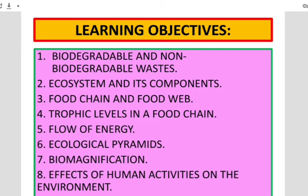In this chapter we are going to read about biodegradable and non-biodegradable waste. But before that we will come to know about what is our environment, then the ecosystem and its components, then food chain and food web, then trophic levels in a food chain, flow of energy, ecological pyramids, bio-magnification and effects of human activities on the environment.